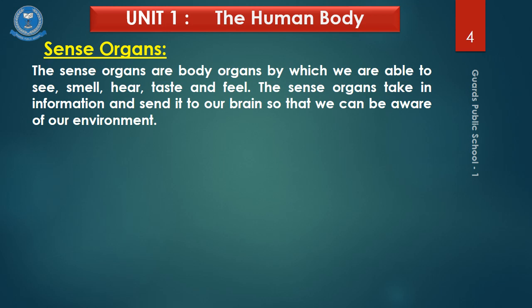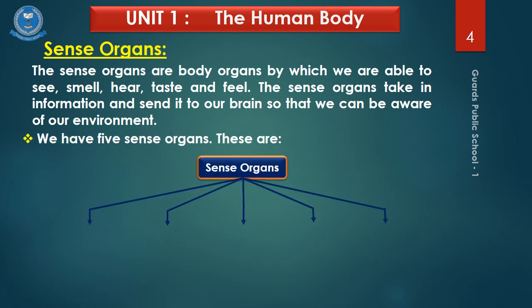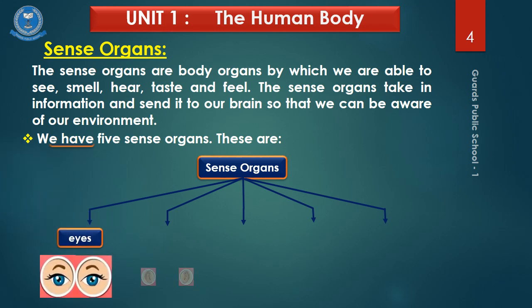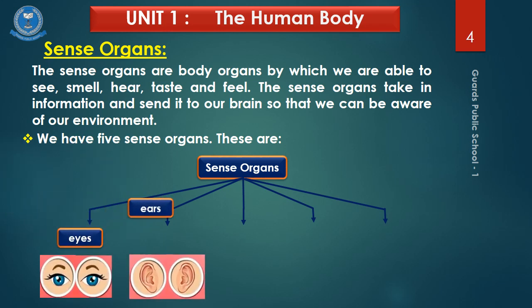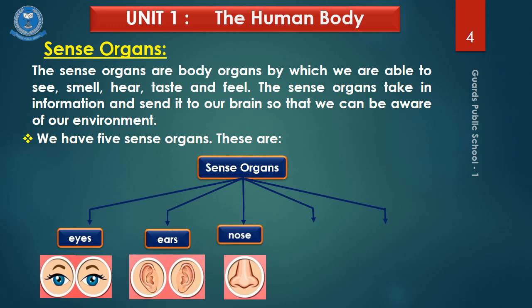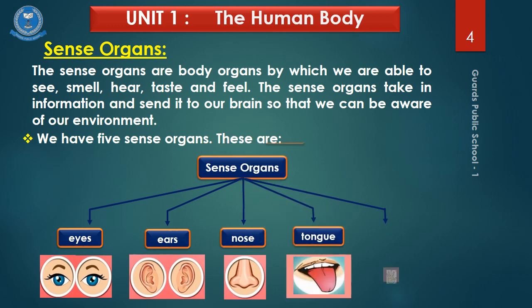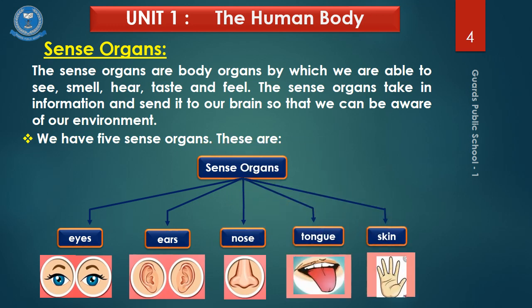Can anybody tell me how many sense organs do we have? Yes, we have five sense organs. These are eyes, ears, nose, tongue and skin. Let's learn more about them.